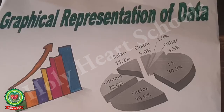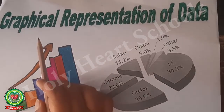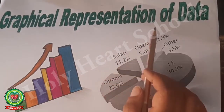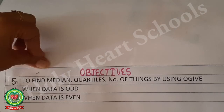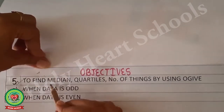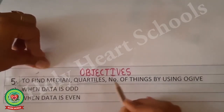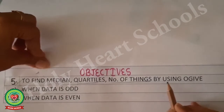Welcome to math class. In today's math class we will discuss the next types of the topic: graphical representation of data, which tells us how to visualize statistical data. We will learn how to find median, quartiles, and number of things by using an ogive.